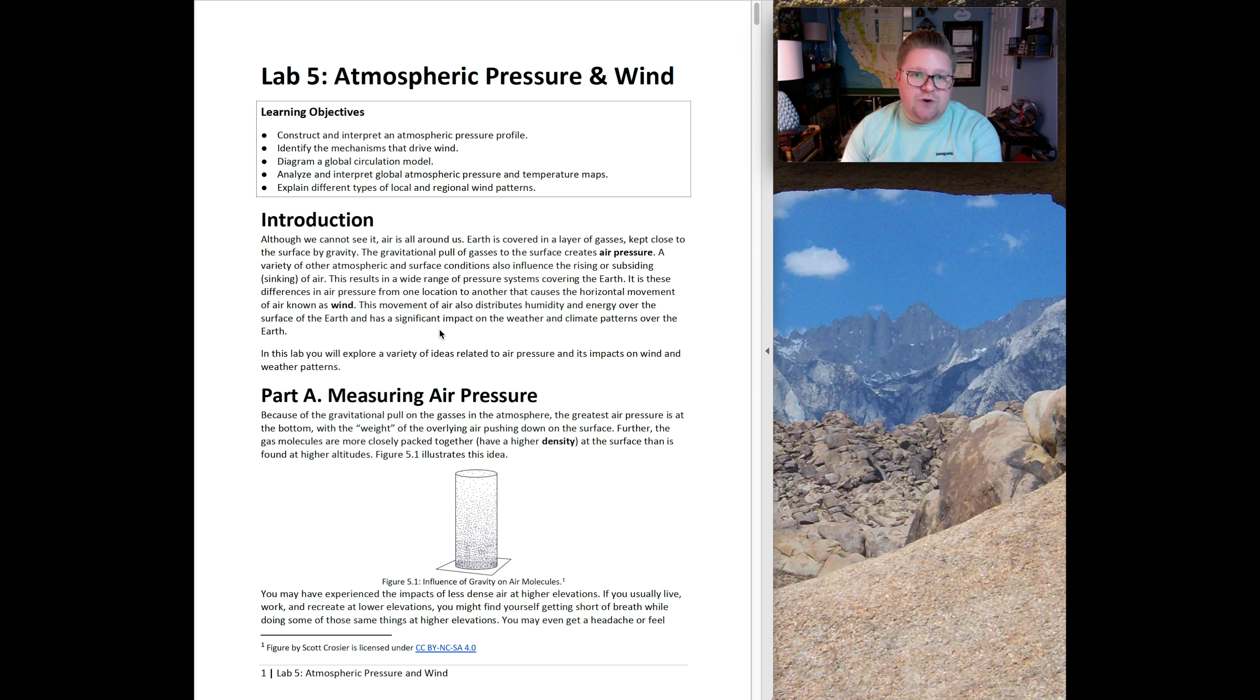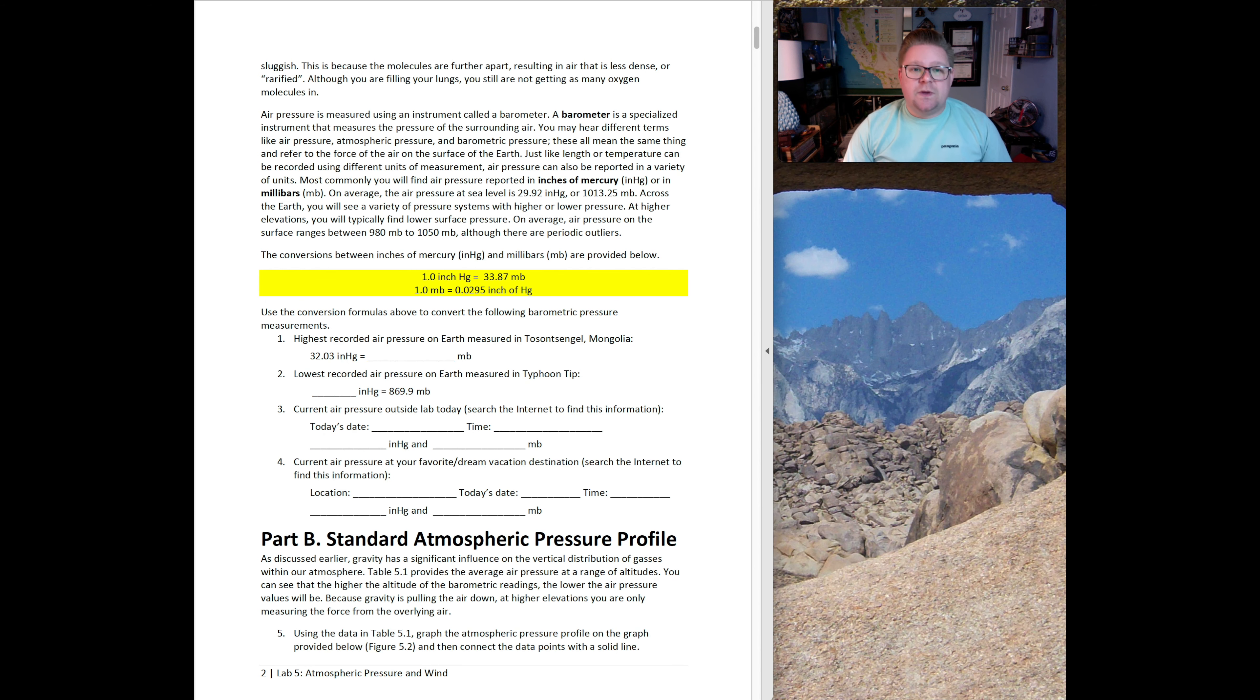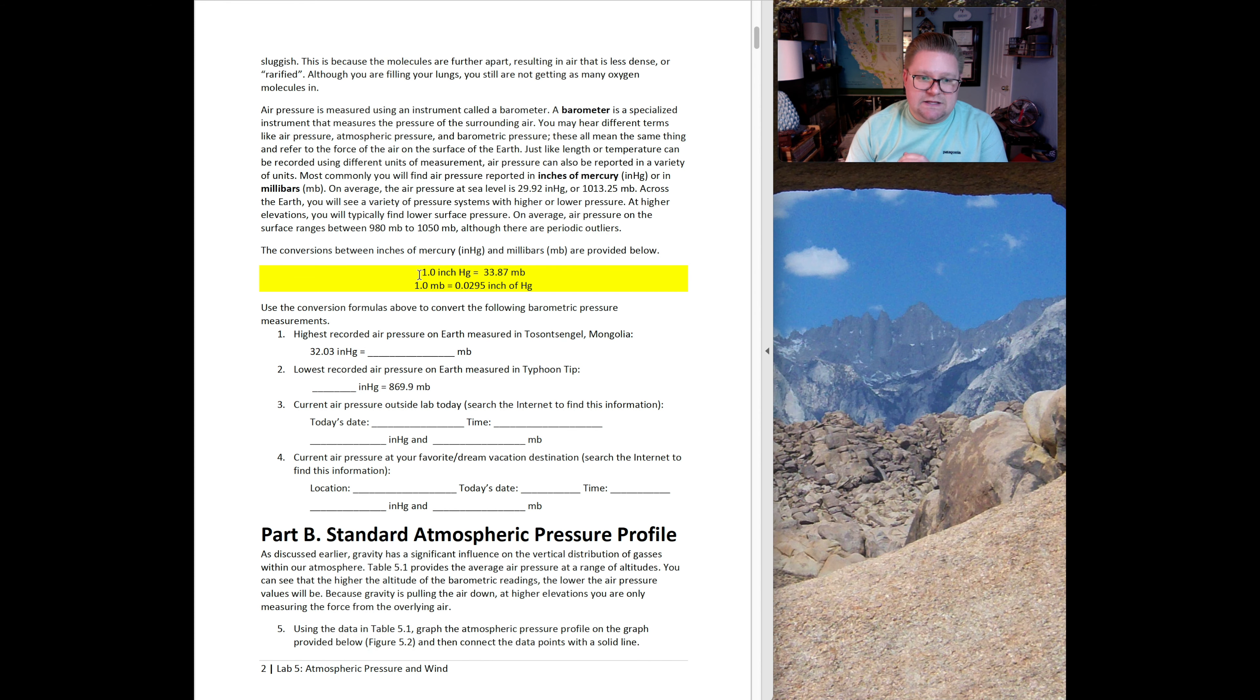As we can observe the diagram, figure 5.1, and the influence of gravity and air molecules, those molecules are being condensed and squished together at the bottom of this container. Moving forward, we can learn different terms, such as a barometer, which is a tool that measures barometric pressure, measured as inches of mercury, known as inches Hg, or millibars. This first activity is having you use the conversion of inches of mercury into millibars.